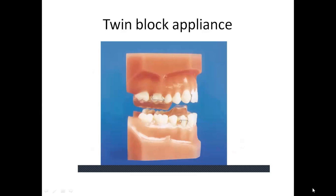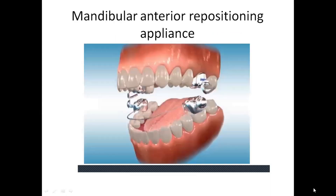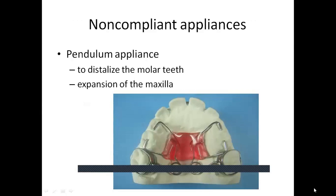The twin block appliance has a two-part removable or cemented design in which the interaction between the maxillary and mandibular parts controls mandibular posture forward, and it is reportedly better tolerated by patients. The MARA (mandibular anterior repositioning appliance) consists of oversized stainless steel crowns on maxillary and mandibular molars; elbows insert into tubes on the maxillary crowns, and arms protrude from the mandibular crowns, forcing mandibular repositioning forward into Class I, delivering anterior force to the mandibular arch and posterior force to the maxillary arch.